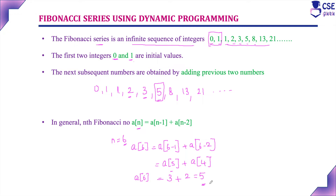In dynamic programming, we have already discussed two methods: one is the memoization method, which is a top-down approach, and the second method is the tabulation method, which is a bottom-up approach. We are going to implement both methods using dynamic programming to generate the Fibonacci series.